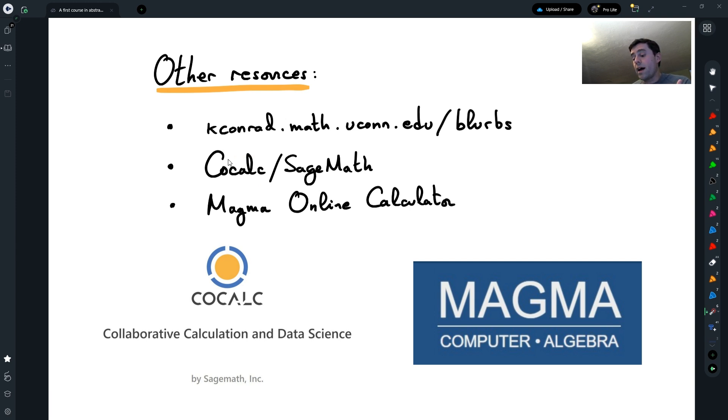So you can have a look at that and then use CoCalc and learn how to use it. I will also show you how to use the MAGMA online calculator. MAGMA is another piece of software that is very powerful in algebra and number theory. There is a lot that one can do with MAGMA to run computations in the computer.